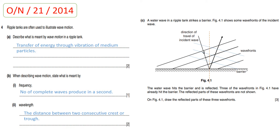Part B asks: define frequency and wavelength. Frequency is defined as the number of complete waves produced in a second. Wavelength is the distance between two consecutive crests or troughs. Since ripple tanks involve water waves, which are transverse waves, we use the terms crest or trough rather than compression or rarefaction when defining wavelength.